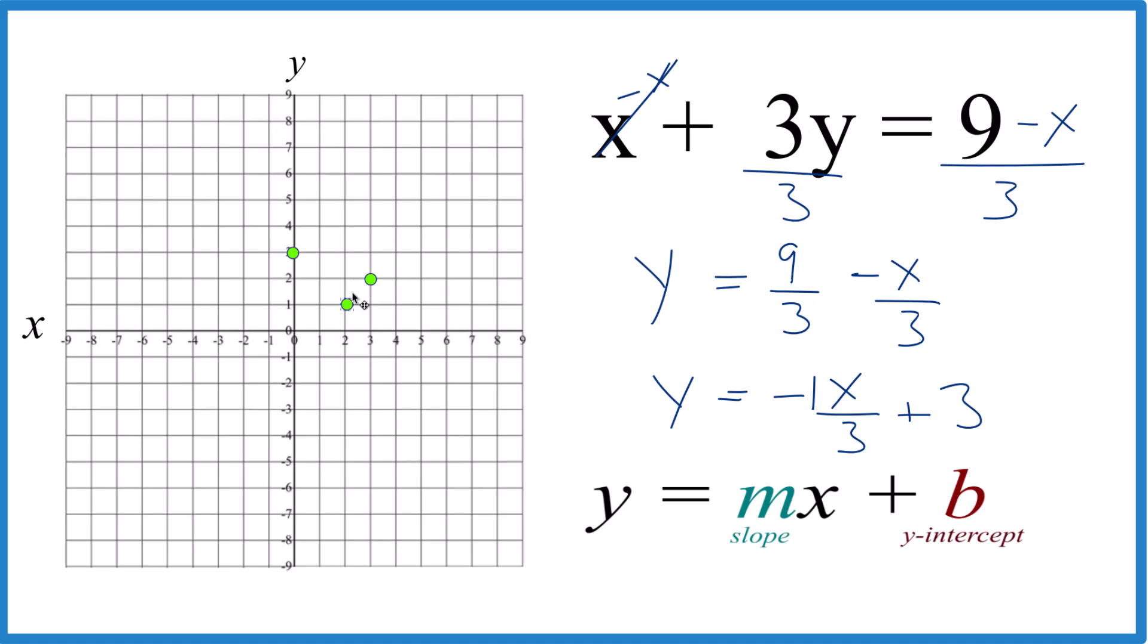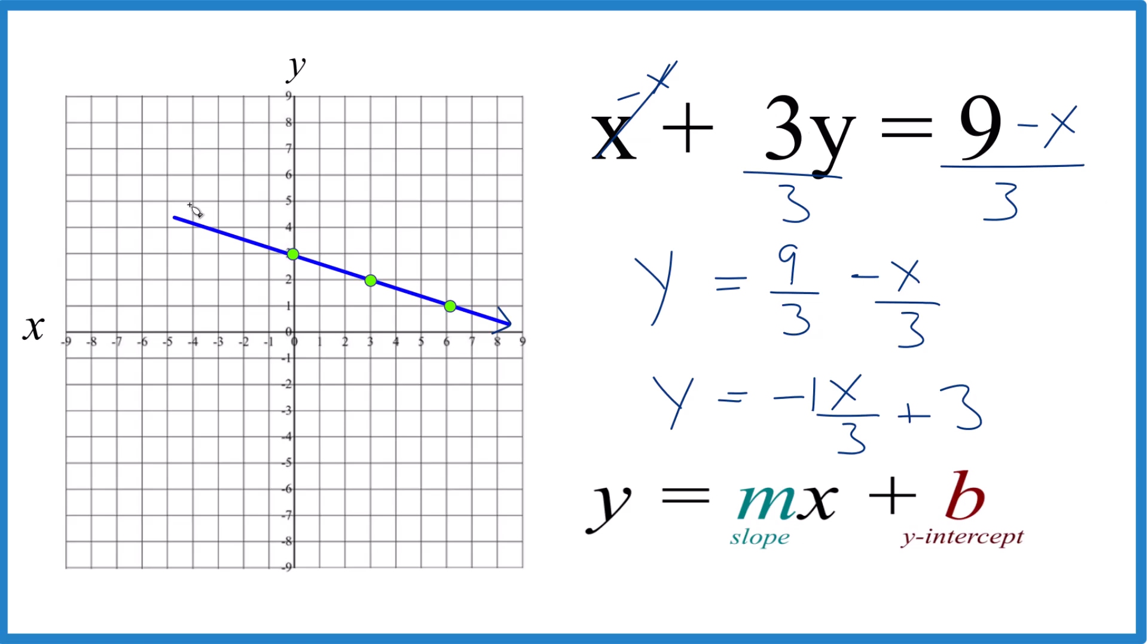And then we do it again. Down and over 1, 2, 3. You can see that all lines up. Let's put a line through it. Then we'll put an arrow to show that this goes to infinity. That's the graph for x plus 3y equals 9. We use slope intercept form.